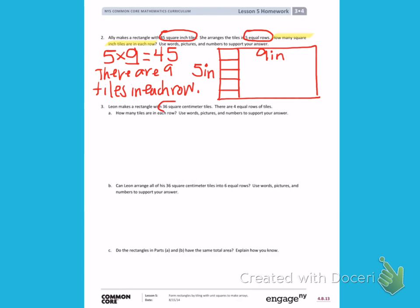Just like number 2. This time we have a total of 36 square centimeter tiles. And we have 4 equal rows. We still have to find how many there are in each row. I have a total of 36 tiles.